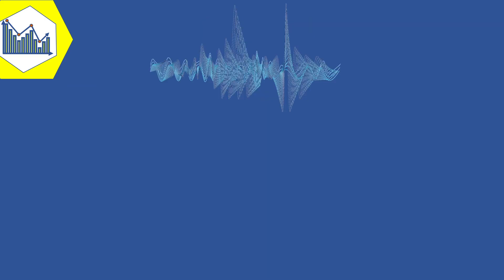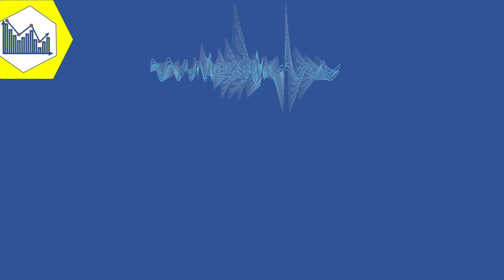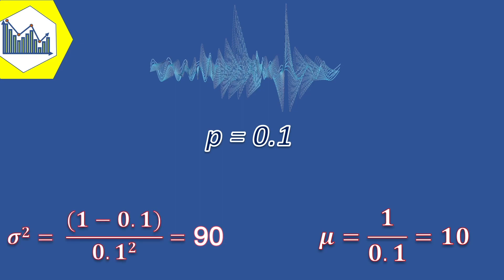If we go back to our example about transmitted bits, we can see that with p equals 0.1, the mean number of transmissions until the first error is 1 over 0.1 and that is equal to 10. And the variance of the number of transmissions before the first error is (1 minus 0.1) over 0.1 squared and that is equal to 90.